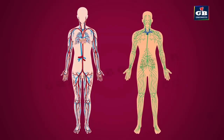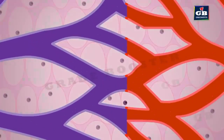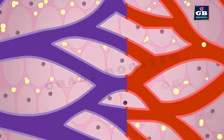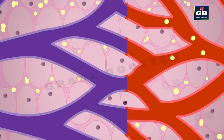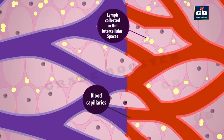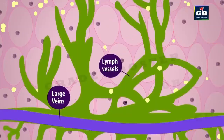Lymph flows in the lymphatic system. Lymph is a colorless fluid. The liquid part of blood is called plasma. This plasma escapes out of the circulatory system through small pores in the walls of capillaries and accumulates in the intercellular spaces of different tissues. Later, this fluid becomes lymph. Lymph enters the lymphatic vessels through lymph capillaries, and these lymph vessels eventually open into the large veins.